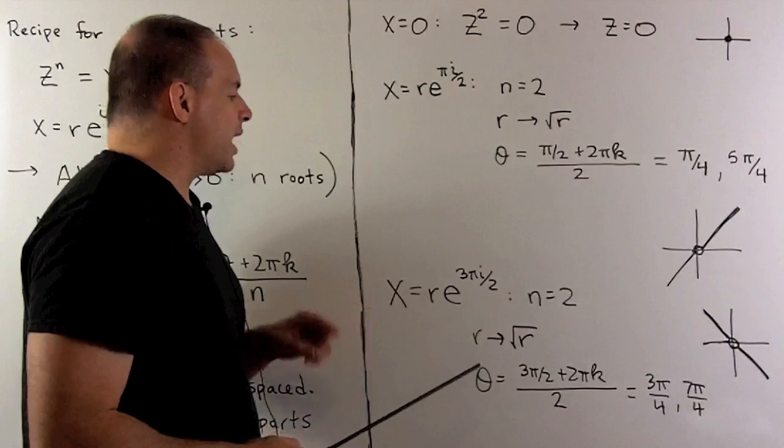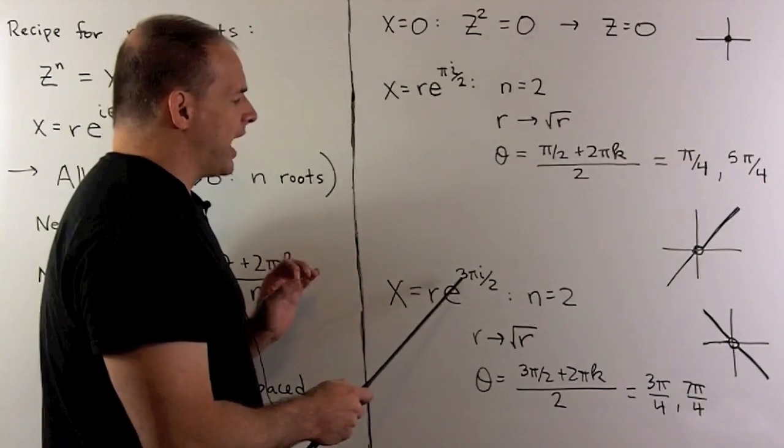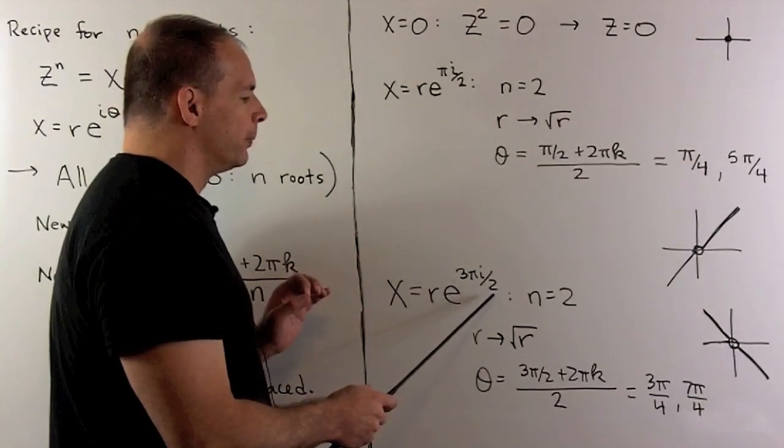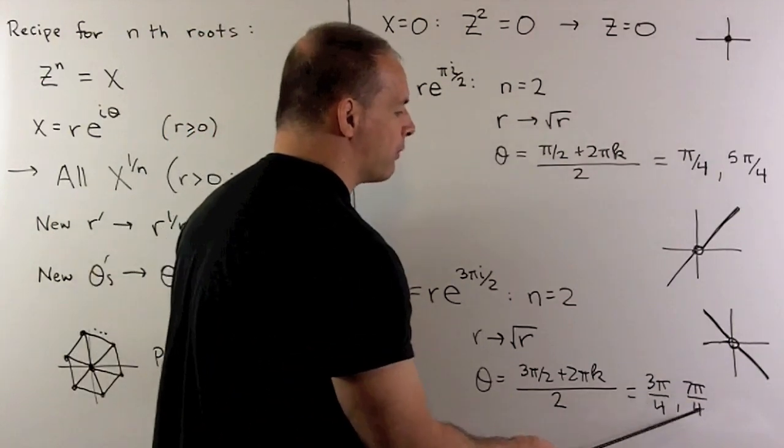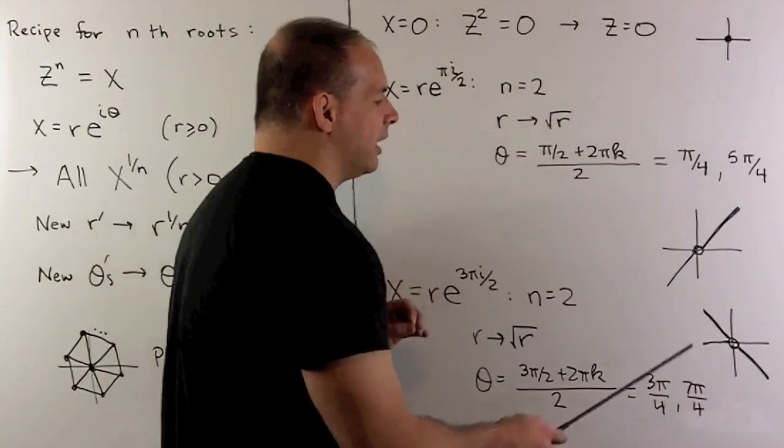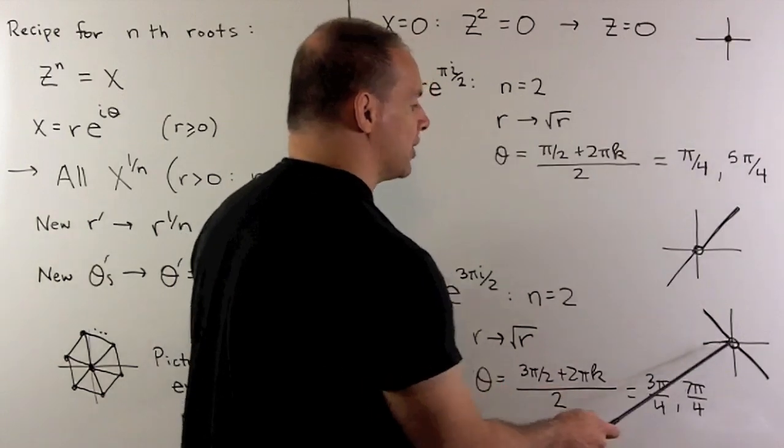Similarly, for the lower imaginary axis, we're using the angle 3 pi over 2. Out of here, we're going to get the angles 3 pi over 4, 7 pi over 4. We're looking at the line y equals minus x, minus the origin.